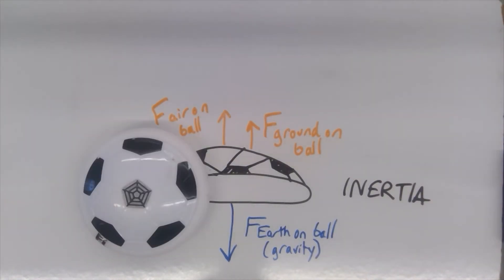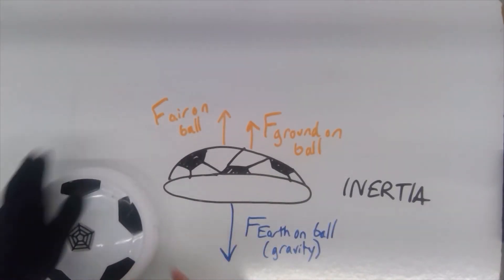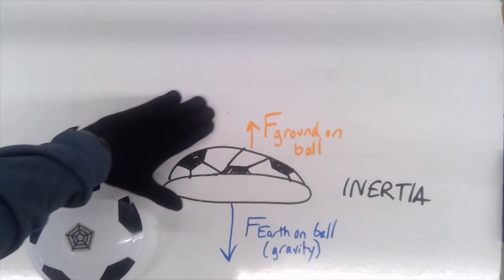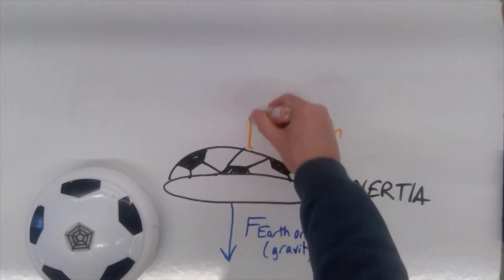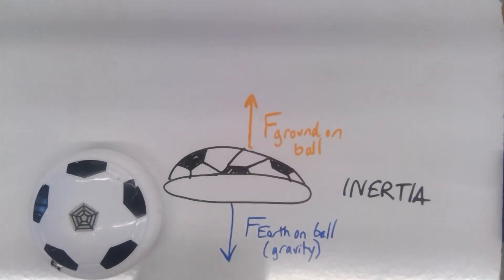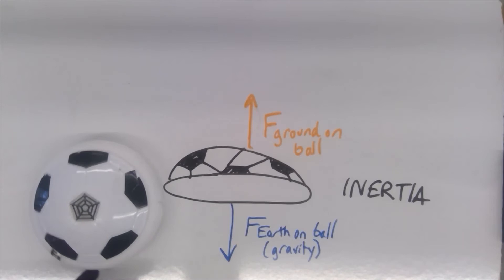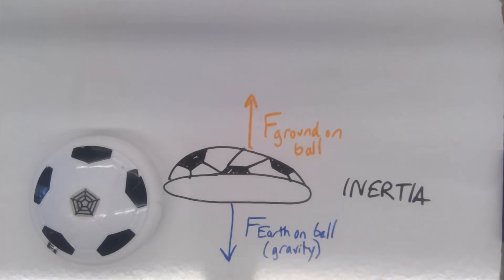Inertia also applies to when objects aren't moving. The forces of gravity and the normal force are still in play on the hover ball, though there is no longer air acting on the ball since the fan is off, so it makes more direct contact with the ground. These two forces balance each other out. The tendency of this hover ball is to not move, and so it is also traveling at a constant velocity — zero meters per second — because of inertia. It wants to keep doing what it's already doing.